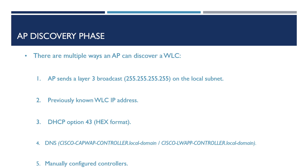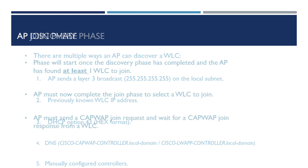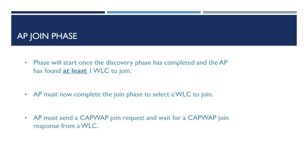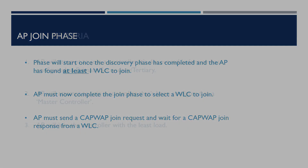Once the AP has a list of controllers discovered as part of the discovery phase, the AP will then attempt to join the wireless controllers it has discovered. It's worth noting that the join phase will only begin if the AP has found at least one controller to attempt to join. If the AP didn't discover any controllers, the discovery phase will start again. As the AP will potentially have a list of controllers it can join, it will prefer a controller as follows.